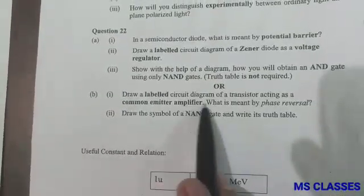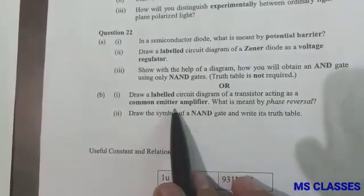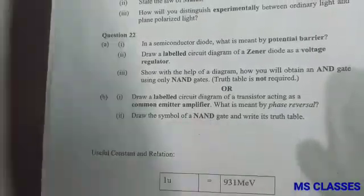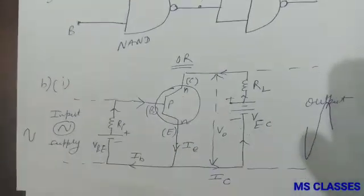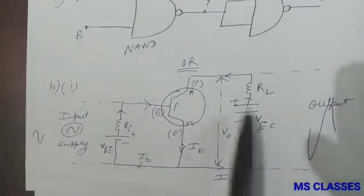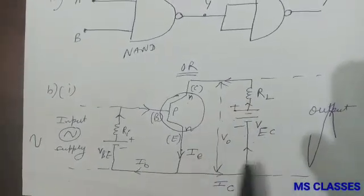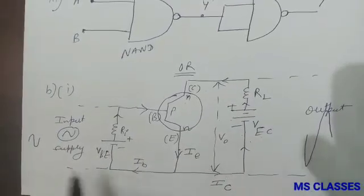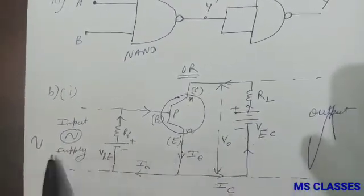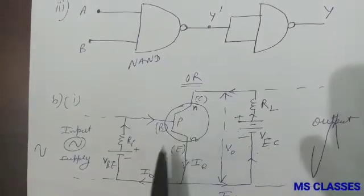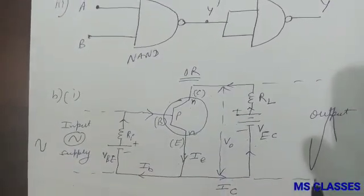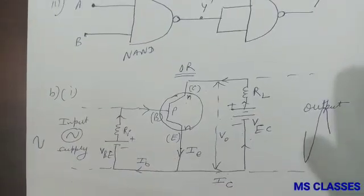Or first part: Draw a labeled circuit diagram of a transistor acting as a common emitter amplifier. So this is the required diagram where the left side is forward biased and the right side is reverse biased. And they have asked what is phase reversal. So you can see the phase difference of 180 degree because of this common emitter transistor, that is called phase reversal where we get the reversing of the phase at an angle of 180 degree.